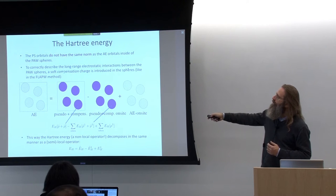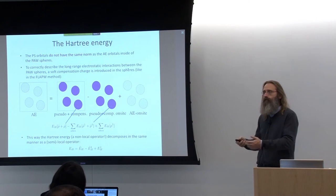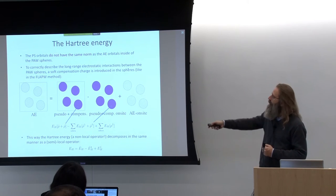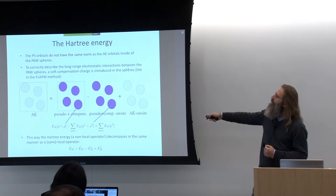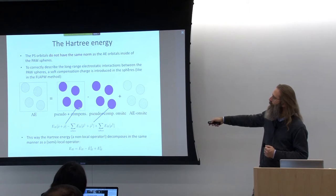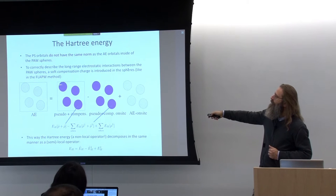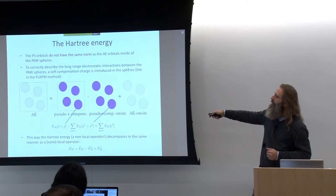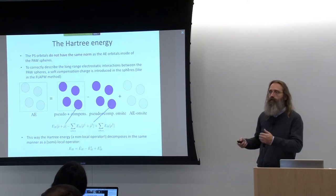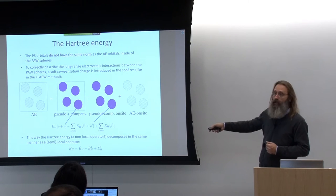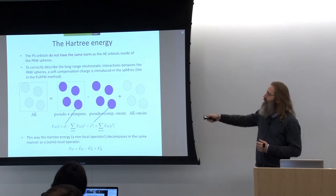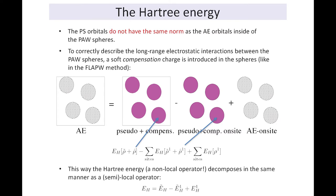These soft compensation charges are soft in the sense that they must be representable in terms of plane waves. Adding these charges makes the potential in the interstitial region correct. The fact that we have modified this charge density is then compensated by adding these compensation charges on the radial grids as well, where they are subtracted out. So we have long-range interactions between charge densities corrected on the plane wave grid, and the modification to the pseudized charge density corrected on the radial grids.